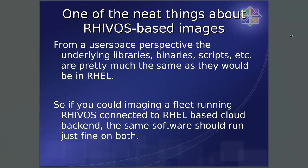One of the neat things about Red Hat in-vehicle operating system-based images is that from a user-space perspective, it looks pretty much the same as RHEL 9 or CentOS Stream 9. That's pretty advantageous because if you build a package for any of the distributions in the CentOS Stream family, it should just work. For example, if you can imagine a fleet of vehicles connected to a RHEL-based cloud backend, the same packages should just run fine on both.